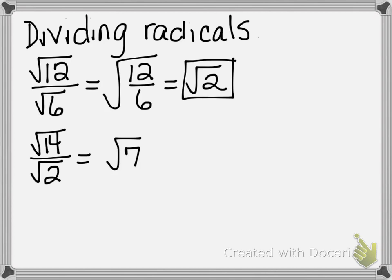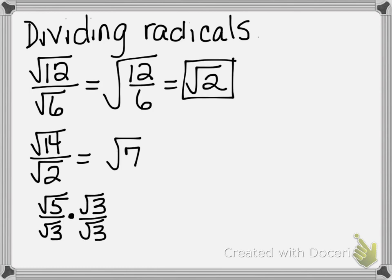What if they don't divide evenly? Let's do a simple one: square root of 5 over the square root of 3. Clearly 5 cannot be divided by 3 to give a whole number answer. But you can't leave that radical in the denominator — that's a big rule when you're dividing radicals. Never leave a radical in the denominator; it's not simplified. With monomial radicals, you're just going to multiply top and bottom by the radical that's in the denominator.